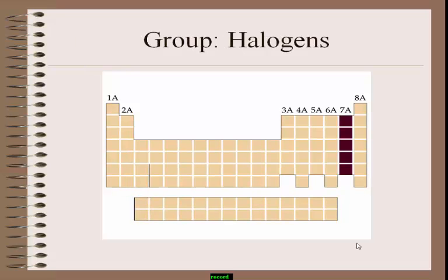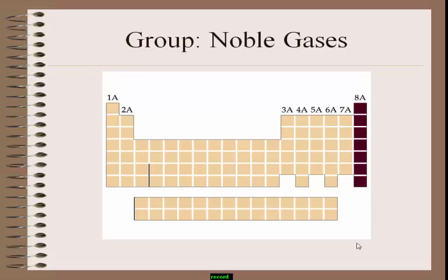Next, the 17th group elements are called halogens — they contain seven valence electrons. Chlorine, bromine, and iodine come under this group. The 18th group elements are noble gases — neon, argon, krypton, xenon, radon, etc. These noble gases are also called rare gases.